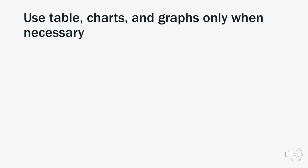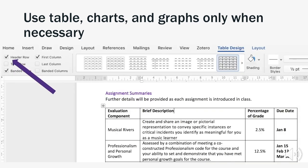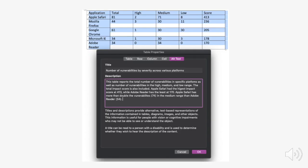Use tables, charts, and graphs sparingly in any type of digital media you create because they can be difficult for assistive reading devices to navigate. If using a table in Word, be sure to always select the header row option from the table layout menu. And if you're using charts and figures, be sure to provide a rich alternative description of their content so that students can understand their purpose and the information they convey without actually being able to see the chart.